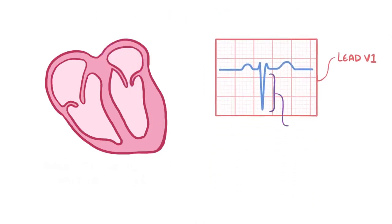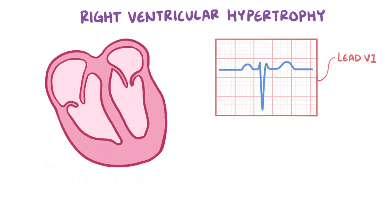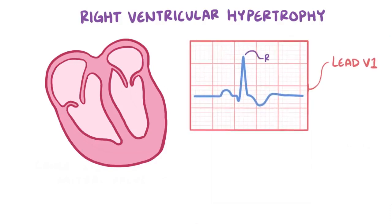Normally the QRS complex is mostly negative in lead V1, because the large left ventricle, which carries the greatest amount of muscle tissue, is oriented down and away from this electrode. In right ventricular hypertrophy, the thicker right ventricle helps to counterbalance the left ventricle, and so it makes lead V1 more positive — more specifically, it makes the R wave bigger, which is the upward deflection of the QRS complex.